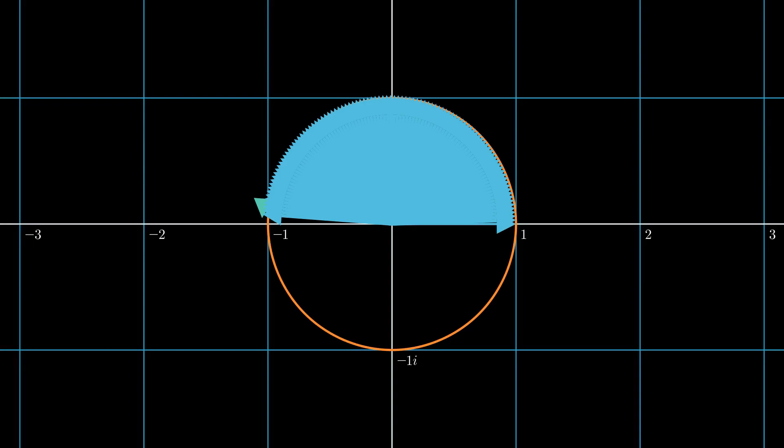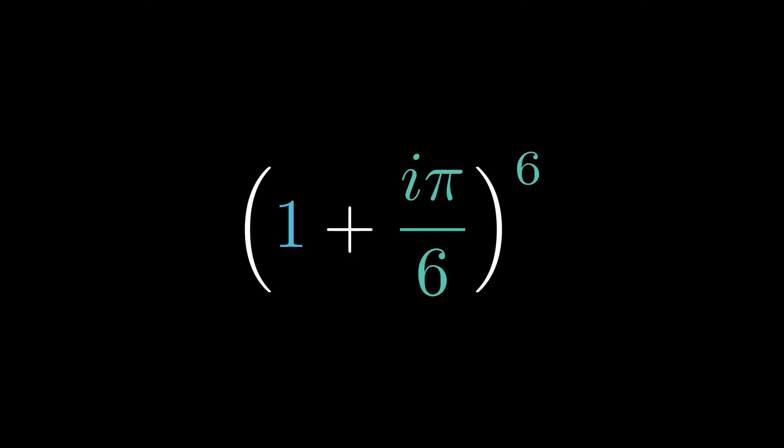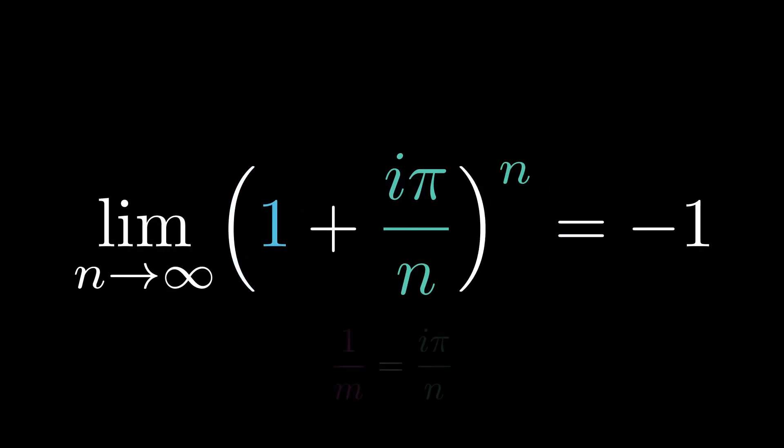Seems like if our steps are infinitely small, and we take infinite steps, we'll eventually evolve the state onto the negative state. Here's a clever way to do it. The expression for n steps is 1 plus i pi over n raised to the nth power. Then allow n to go to infinity.